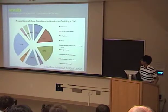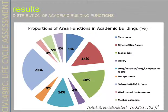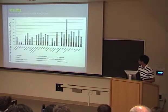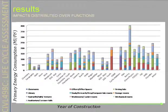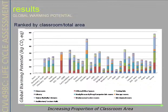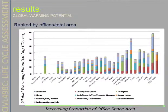Looking at the areas of academic buildings, 25% of building area is in stairwells, halls, and atriums; 18% is for mechanical rooms; and only 9% is for classrooms. The following graphs show the number of types of areas in buildings with respect to primary energy consumption and global warming potential, but no prominent trends are apparent for classrooms, offices, or total area.